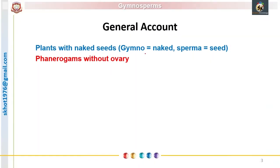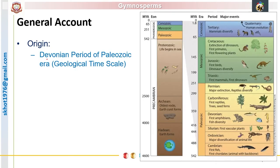The term gymnosperm includes two terms: gymno means naked and sperma means seeds, so these are the plants with naked seeds. As the ovules are produced without a cover, the gymnosperms are also called as phanerogams without ovary. The gymnosperms were originated during the Devonian period of the Paleozoic era.